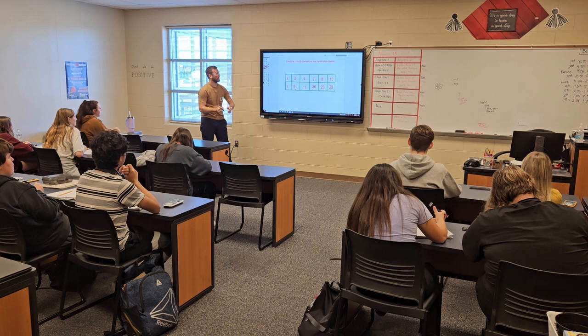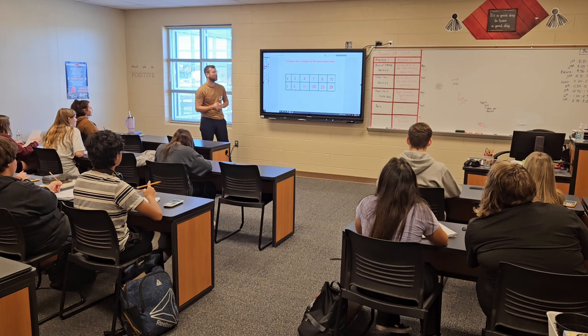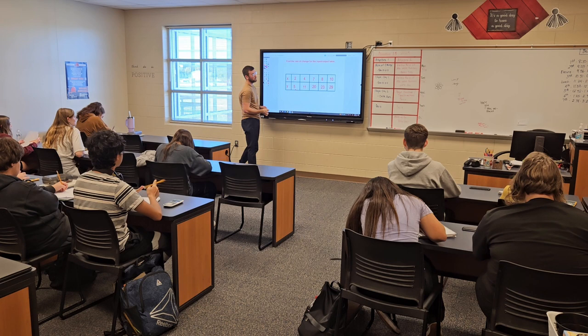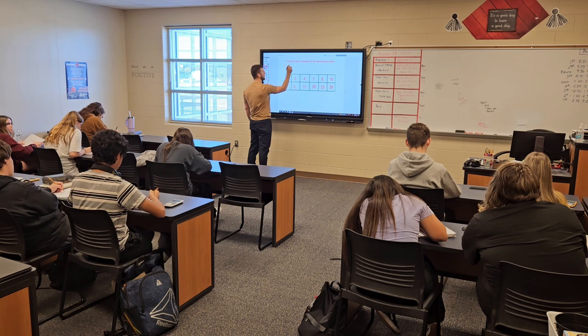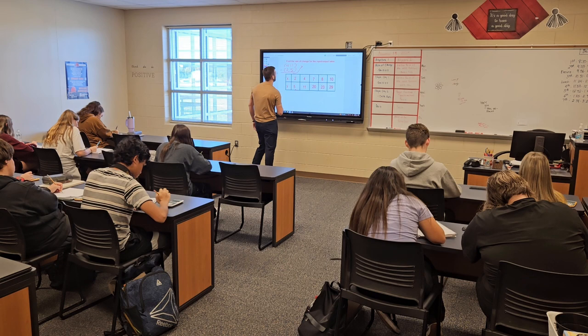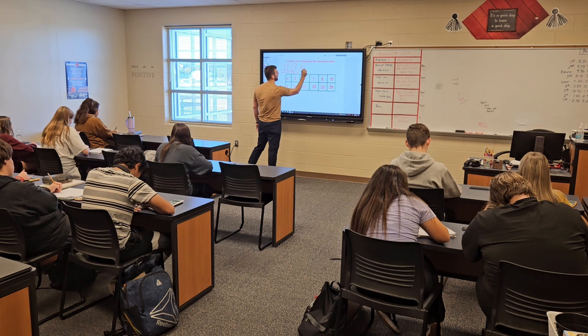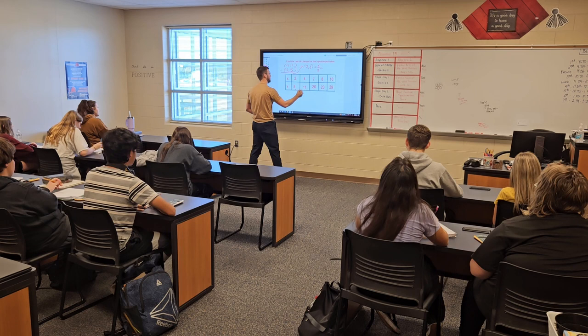Now it asks to find the rate of change of the input and output table. They don't tell you which values to use — you can use any of these ordered pairs. I would use the smallest numbers, which is the first two: 2, 5 and 4, 11. You subtract them and get 2 and 2. Your y over your x equals 3.